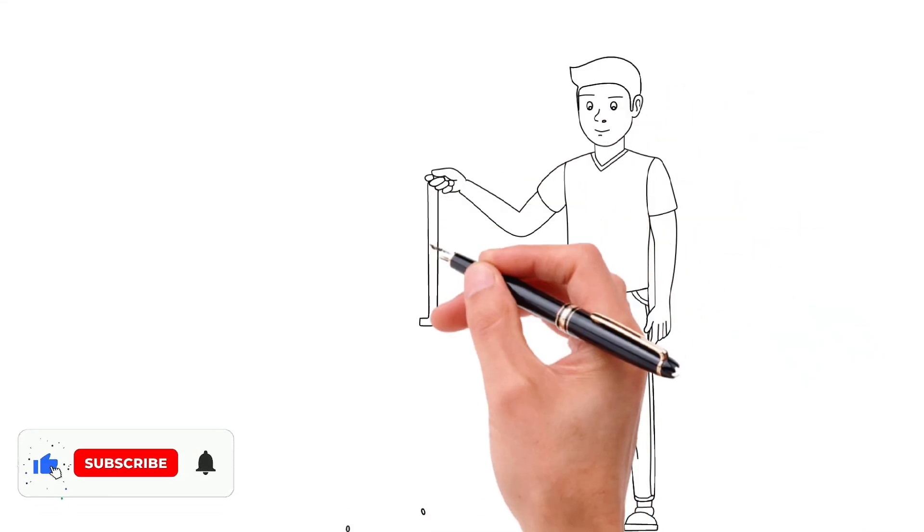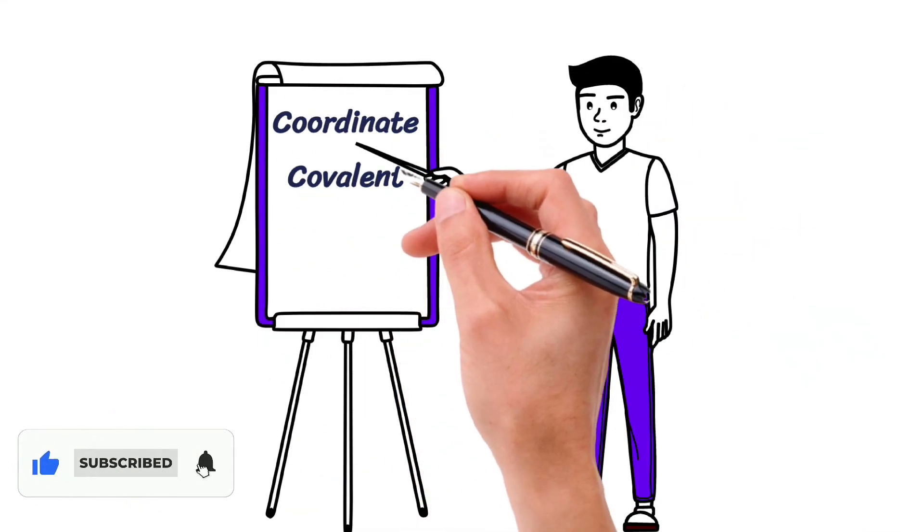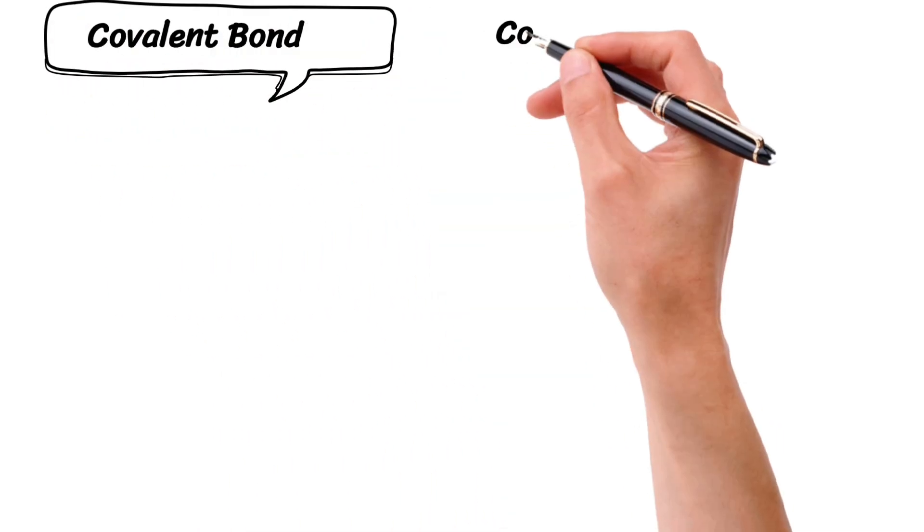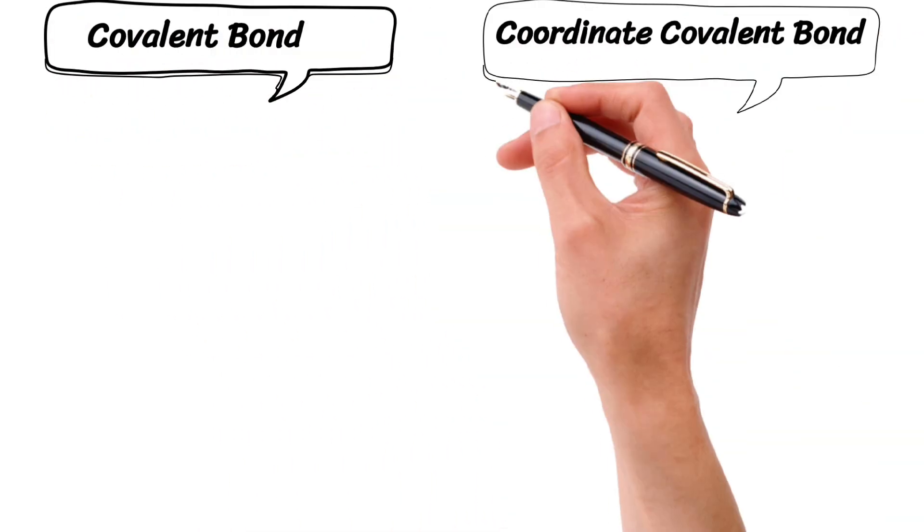In this fully animated lecture, I will teach you a type of chemical bond known as coordinate covalent bond. Let me teach you what is the difference between covalent bond and coordinate covalent bond.